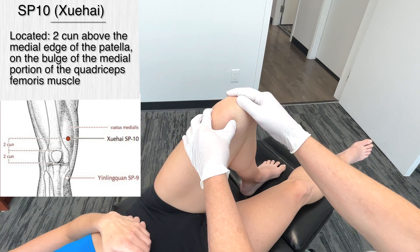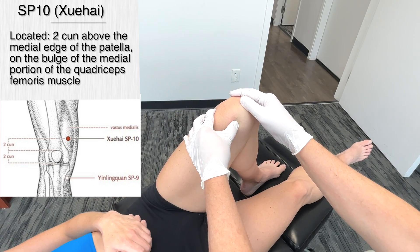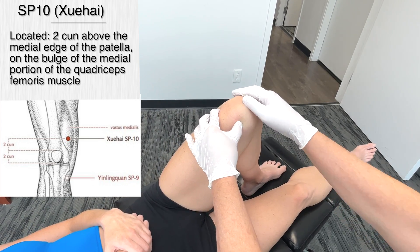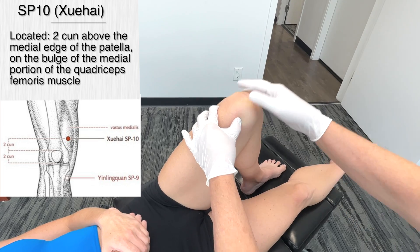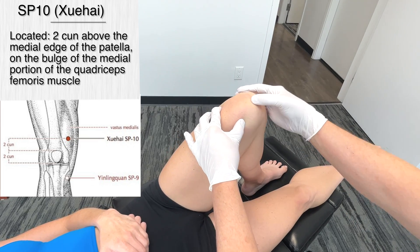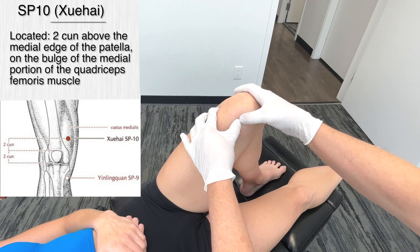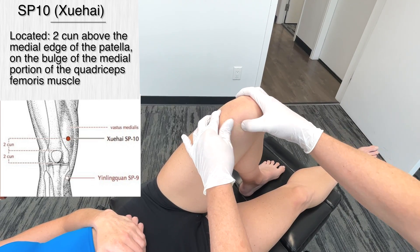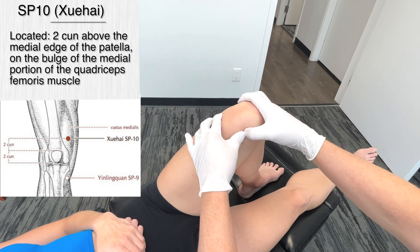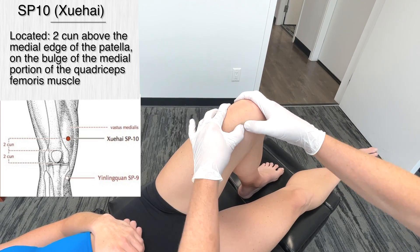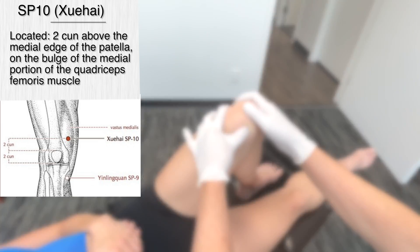This point is supposed to be on the bulge of the medial portion of the quadriceps femoris. Working this area — it feels very tender right there.